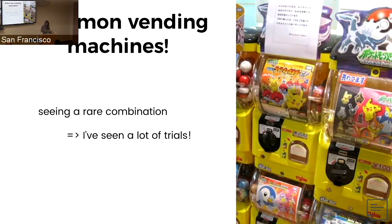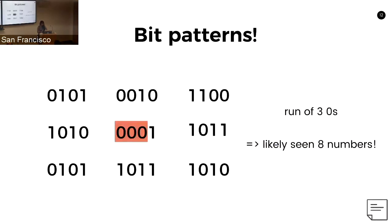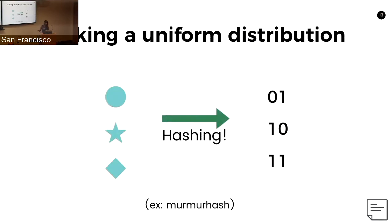Seeing a rare combination means it's likely that I've seen a lot of trials. You can extend this to bit patterns: if you have a bunch of uniformly distributed binary numbers, to have seen a fairly rare number, you've probably seen a lot of numbers. If you see a run of three zeros at the beginning of a number, you've probably seen about eight numbers — similar to Bitcoin's proof-of-work algorithm. We can turn a distribution of values into a uniform distribution of binary numbers by hashing them.